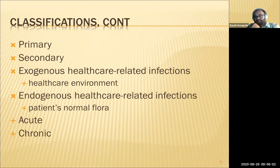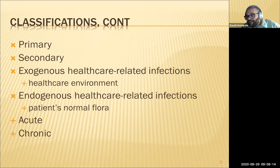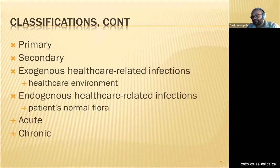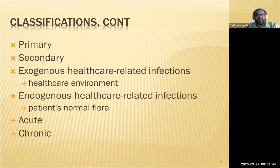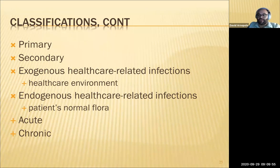Classifications review: primary infection is the first infection — think pneumonia. Secondary is any infection occurring after the primary, especially if someone's immunocompromised from the first illness. For example, someone who had chicken pox may develop shingles (herpes zoster) as a secondary infection when they're older. Exogenous related infections come from the healthcare environment. Endogenous come from the patient's own normal flora. Acute infections are short, while chronic last weeks, months, years, or lifelong.